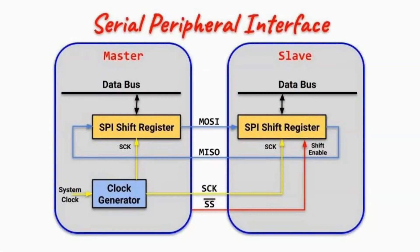Serial Peripheral Interface is a feature found in microcontrollers that enables the interfacing of serial devices such as sensors with microcontrollers. A block diagram of the SPI network is shown here, which is made of a master device — basically a microcontroller or microprocessor — and a slave device, which is in most cases a peripheral device such as a sensor.